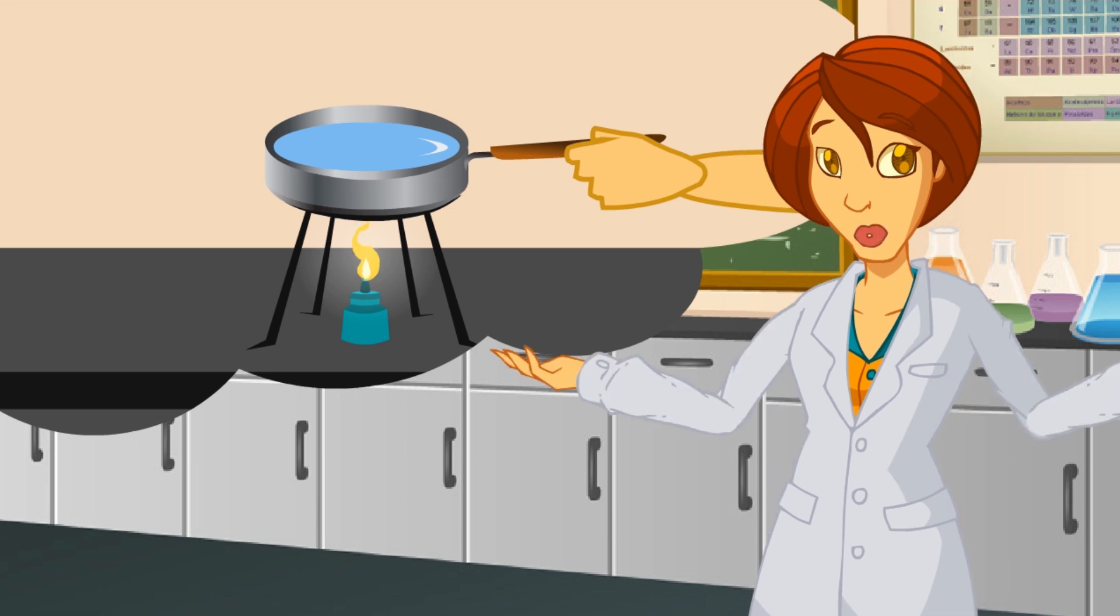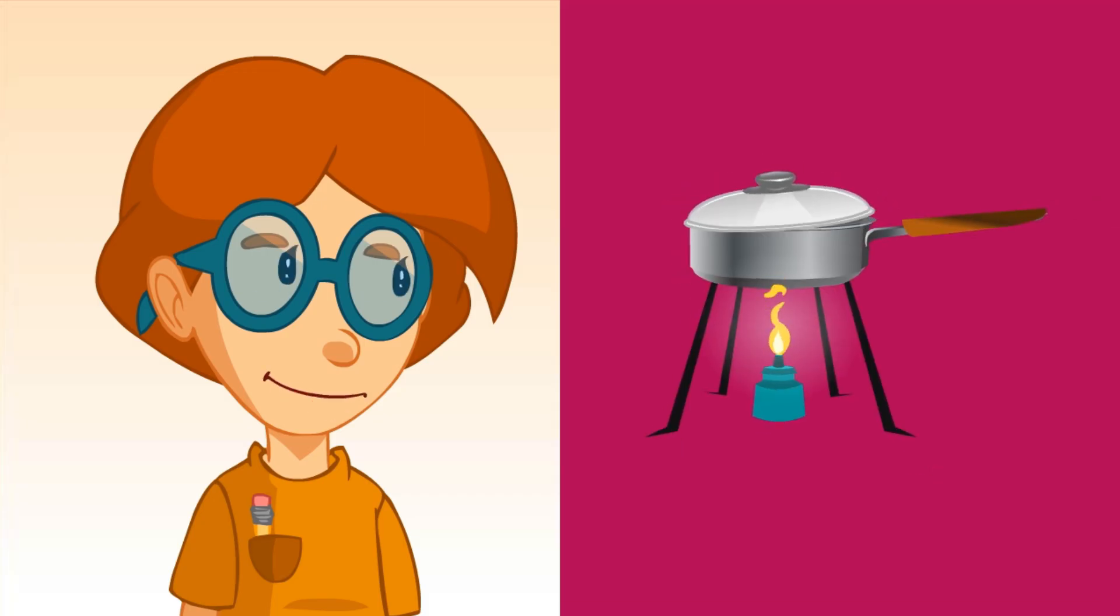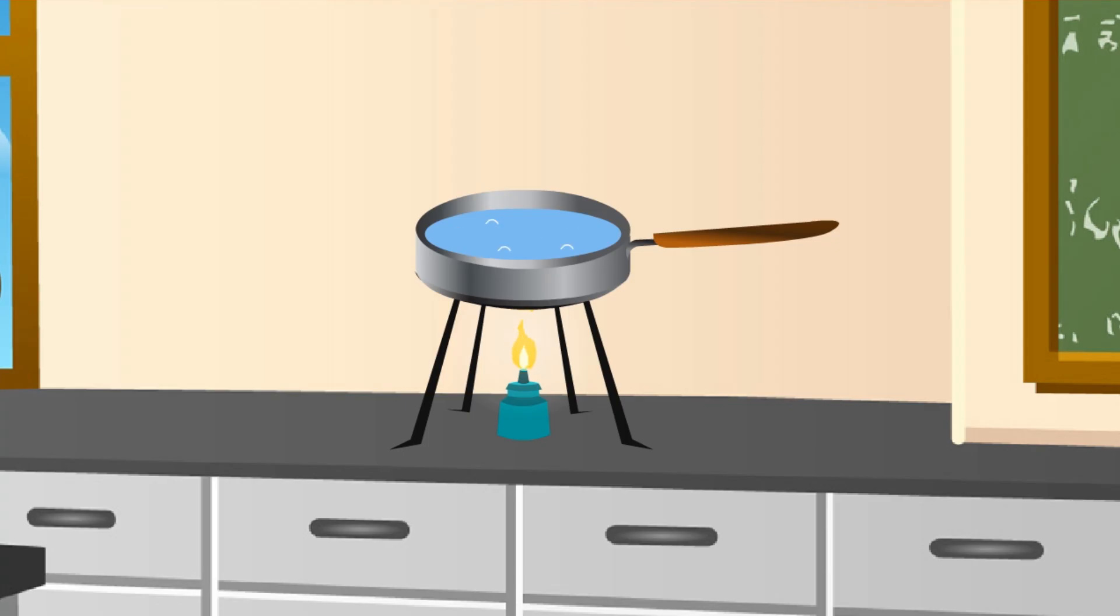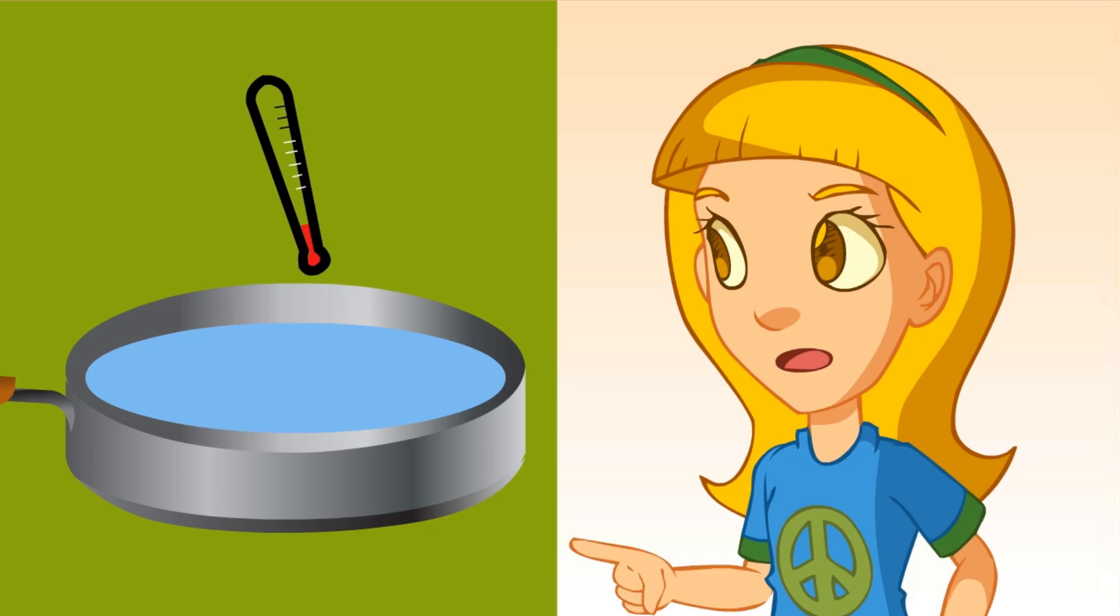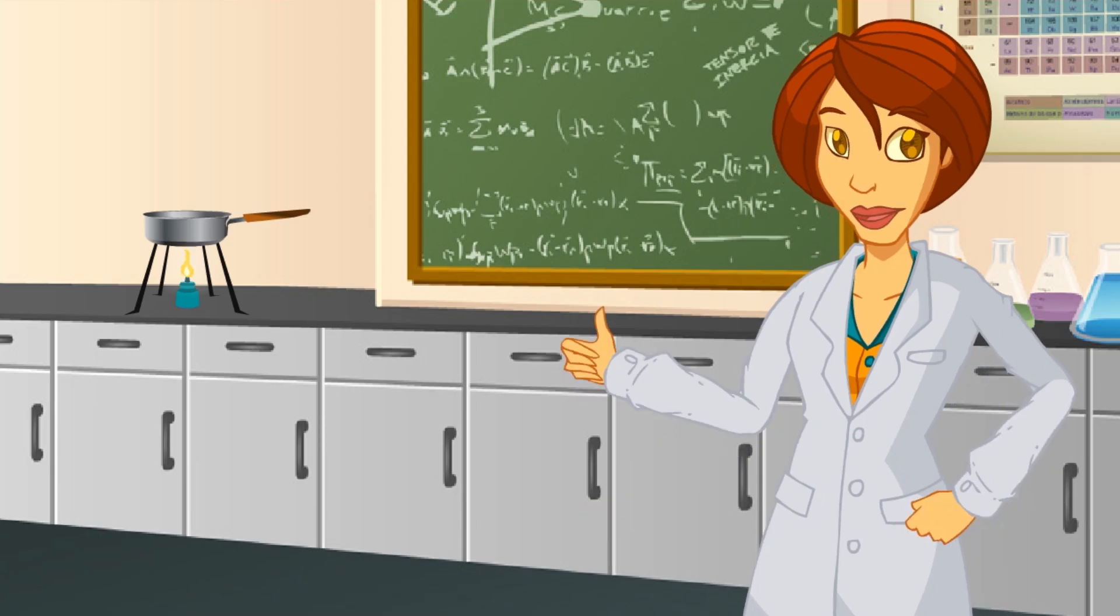I'll light this burner and put this pot with water on it. What will happen? The water will heat up. If we look at the water right now, what can we see? We see that it's moving and bubbles have started to appear. Isn't there anything coming out of the water? Yes, vapor is coming out because the water is about to boil. Very good.